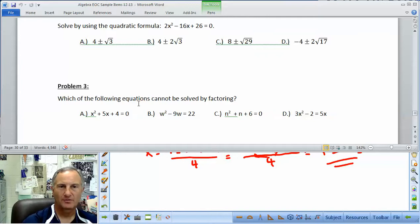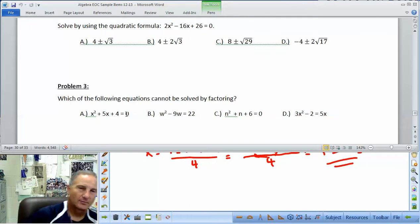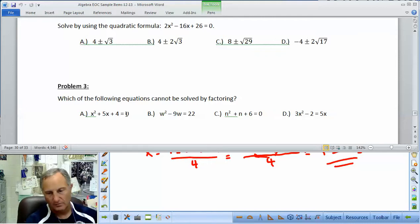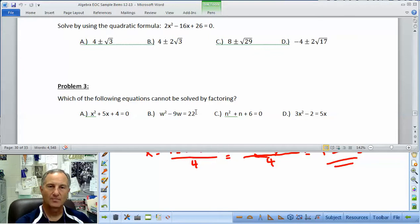Problem 3. Which of the following equation cannot be solved by factoring? Well, let's just take a look here. When a is 1, we should be able to take factors of c that add up to the b term. And factors of 4 that add up to 5 are 4 and 1. So that's factorable. Subtract the 22 over. We'd need factors of 22 that we can subtract and get negative 9. 22 is 11 times 2 and 2 minus 11 is negative 9. So that's factorable. Are there factors of 6 that add up to 1 or b is 1? No. So the one that cannot be factored is c.